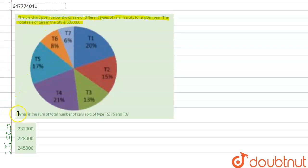Now what is the question? What is the sum of total number of cars sold of type T5, T6 and T3? So let's see. This is our pie chart.